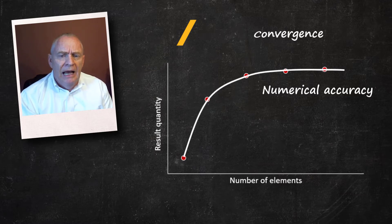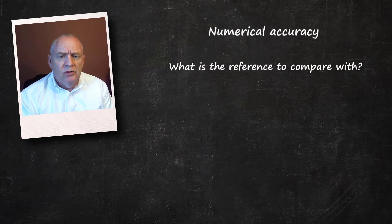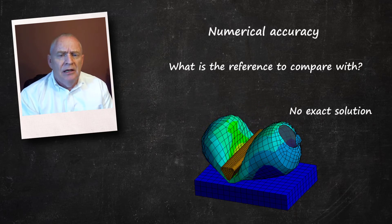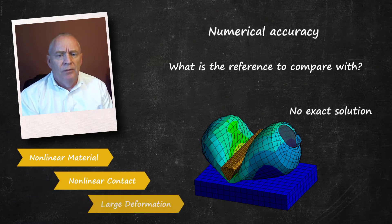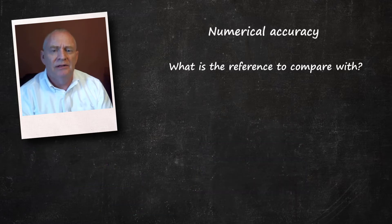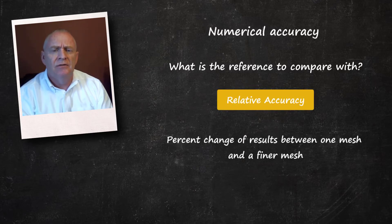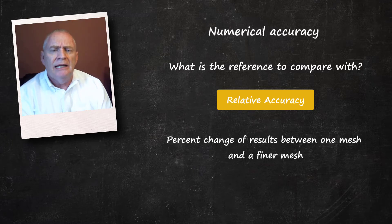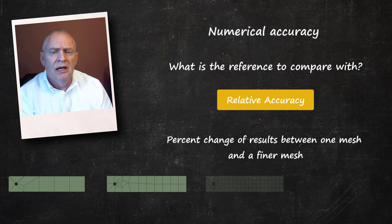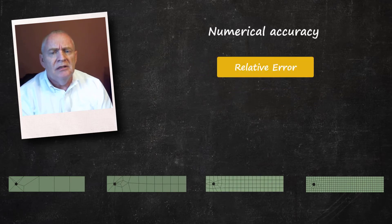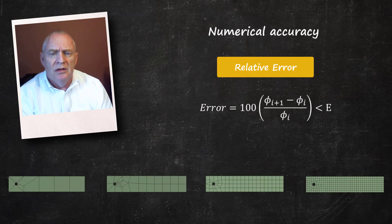Since we are talking about accuracy, we should be aware of what reference results we are using for comparison with the obtained results. In fact, for most practical mechanical engineering problems, there isn't an exact solution or analytical solution because of the complexity of the materials, non-linear contacts and non-linear deformation. Therefore, instead of an absolute accuracy, what we need to track in an analysis is relative accuracy — or to be more precise, the percent change of results between one mesh and a finer mesh. Adaptive convergence requires the problem to be solved multiple times with different levels of mesh discretization, starting with a coarser mesh and moving to a more refined mesh.